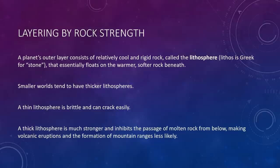In terms of rock strength, a planet's outer layer consists of relatively cool and rigid rock called the lithosphere, where lithos is Greek for stone, that essentially floats on the warmer, softer rock beneath.